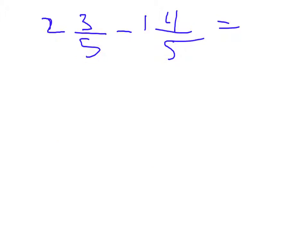Finally, we have 2 and 3 fifths minus 1 and 4 fifths. We are going to do the same thing like all the past two. Borrow 1, so you have 1 and 3 fifths, and then 1 equals 5 fifths. 3 fifths plus 5 fifths equals 8 fifths.